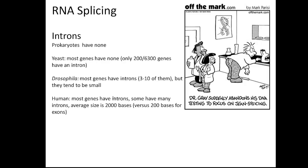In contrast, in humans, most genes do have introns, and some have quite a few — many, many exons and introns. The average size of the intron has increased significantly, so that the intron, on average, is much larger than the exon.